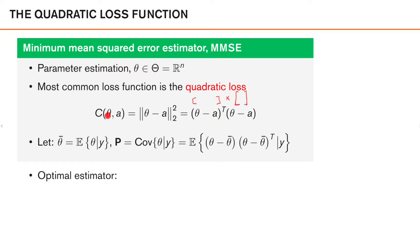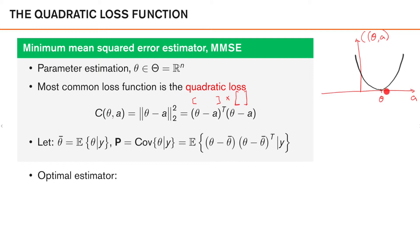Just for illustration purposes, let's assume that theta and a are scalars. If we try to draw this cost function as a function of a, for a fixed value of theta, it would look something like this. We have zero loss at theta, and then the loss grows quadratically as a moves away from theta. The interpretation is that it's okay to make a small error, as long as it's not too big — if a goes too far from theta, the loss increases rapidly.